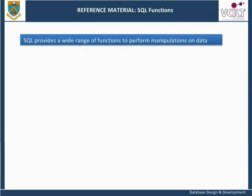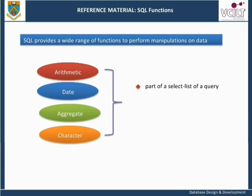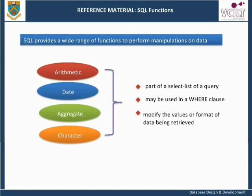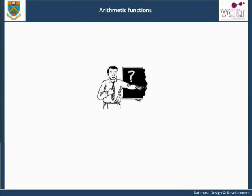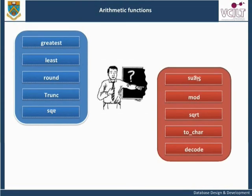SQL provides a wide range of functions to perform manipulations on data during the execution of queries. These functions can be categorized into four types: arithmetic functions, character functions, date functions, and aggregate functions. The functions are used as part of a SELECT list of a query, or if they refer to a specific row, they may be used in a WHERE clause. They are used to modify the values or format of data being retrieved. The most commonly used arithmetic functions include: GREATEST, LEAST, ROUND, TRUNC, ABS, SIGN, MOD, SQRT, TO_CHAR, and DECODE.